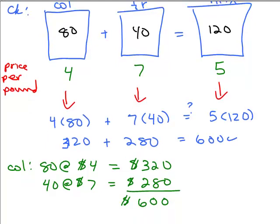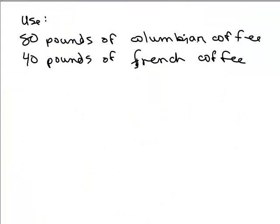So since those are the same, it would have made sense that we used the right amount for each. And the question was, how much of each type to use? So you would say use 80 pounds of Colombian coffee and 40 pounds of French coffee.